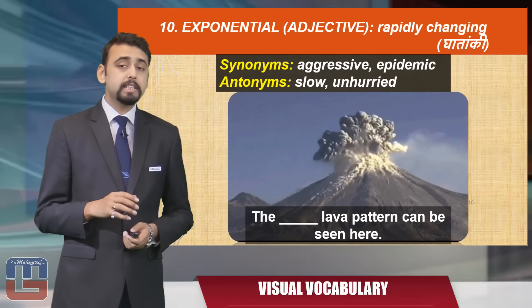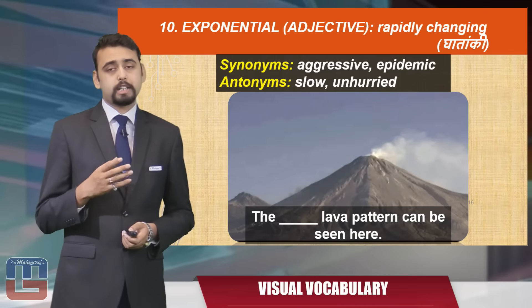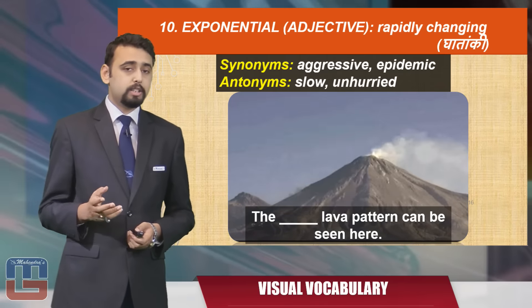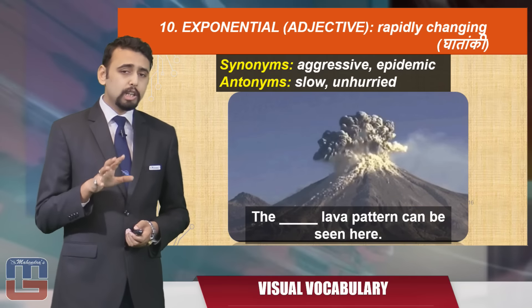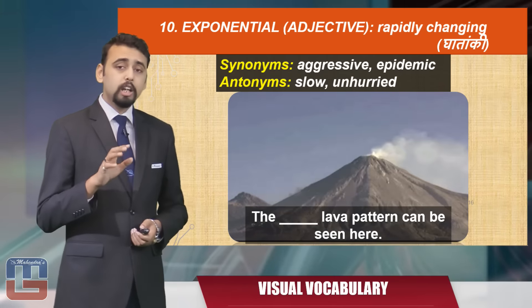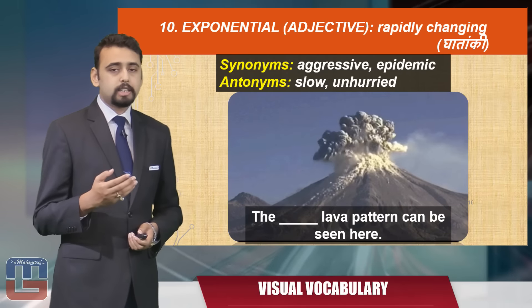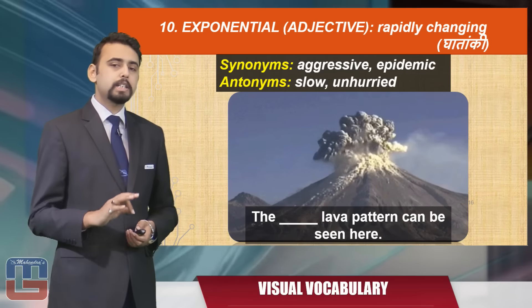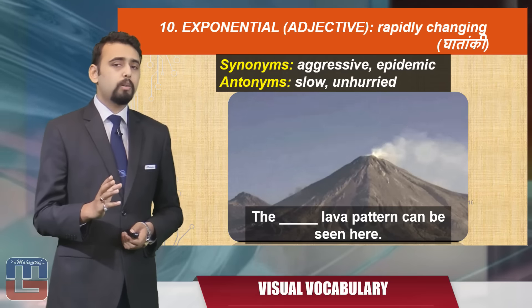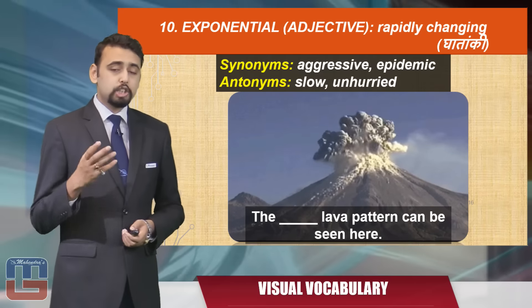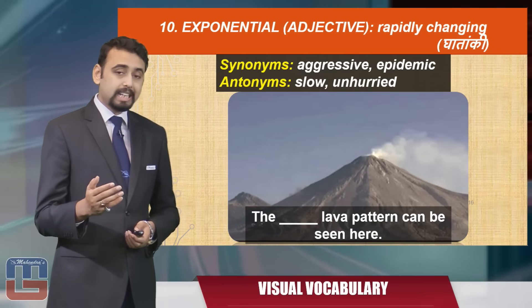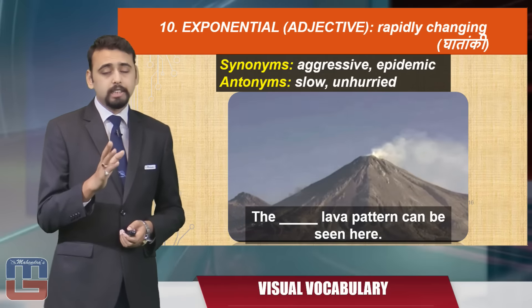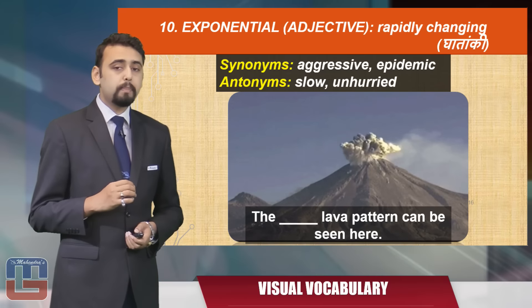The last word is 'exponential,' an adjective meaning rapidly changing. The synonyms are 'aggressive' or 'epidemic' — just the way an epidemic spreads. The antonyms are 'slow' or 'unhurried.' Here's an image of a volcano erupting, showing how rapidly magma changes into lava. The sentence becomes: 'The exponential lava pattern can be seen here.'